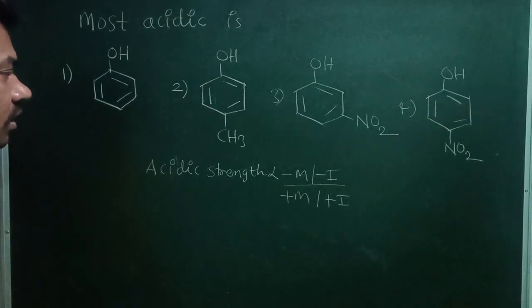So acidic strength of the particular compound is directly proportional to minus M or minus I, or inversely proportional to plus M plus I.